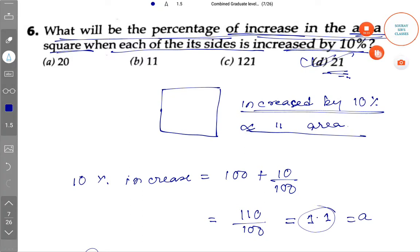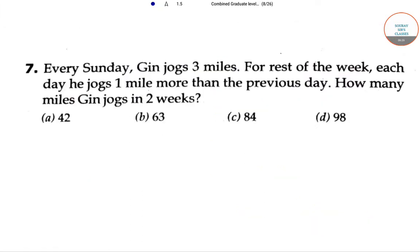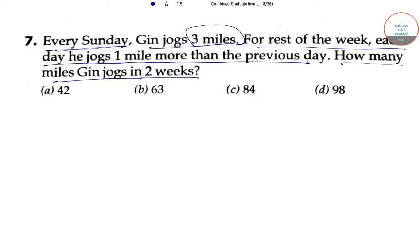Let's see our next question. This is a question about jogging. Every Sunday, Gin jogs 3 miles. For the rest of the week, each day he jogs 1 mile more than the previous day. We have to find out how many miles Gin jogs in two weeks.